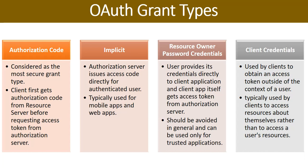The second grant type is implicit grant — a simpler form normally used for mobile applications and web applications where the client is a browser. In this case the authorization server issues an access token directly for the authenticated user, with no involvement from the resource server in the token generation process and no authorization code passed from the resource server to the client. The access token is created directly by the authorization server. While the level of security is lower than the authorization code type, it improves performance and throughput for mobile and browser-based web applications.